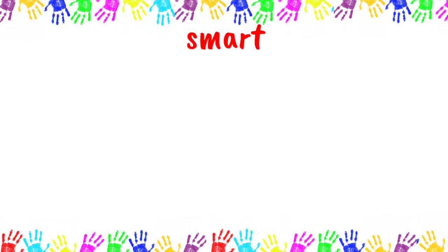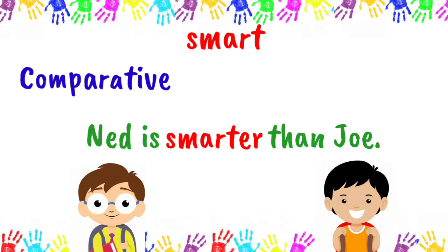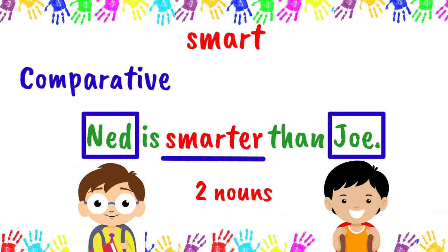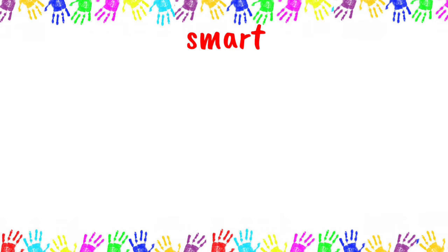Now, let's have the comparative degree. 'Ned is smarter than Joe.' As we can see in this sentence, there are two nouns being compared — Ned and Joe. And 'smart' became 'smarter.' This is one way of forming the comparative degree of an adjective — we add ER to it.